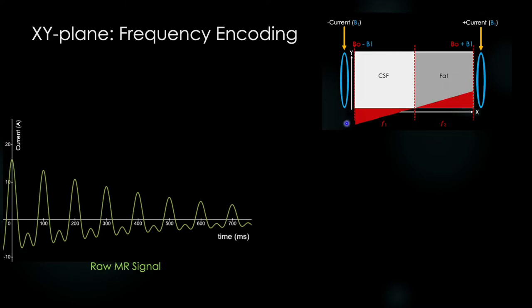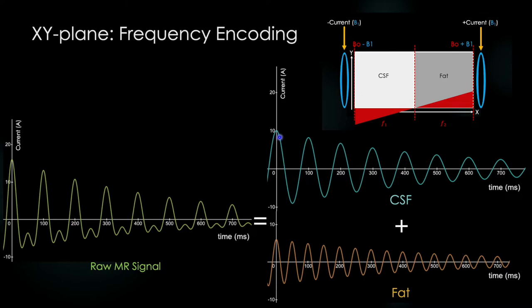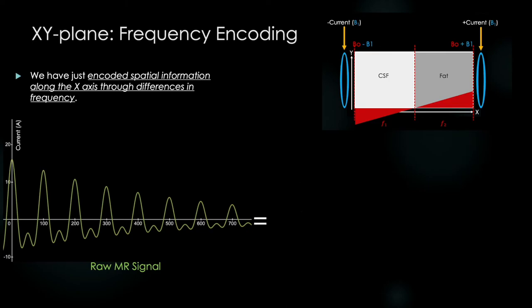Well, we've changed the magnetic field across the slice. So our CSF voxel will experience a different magnetic field than our FAT voxel, and will therefore precess at a different Larmar frequency than the protons in our FAT voxel. Our CSF voxel will then have a T2 decay curve that looks like this. And our FAT T2 decay curve will then look like this. Notice that they now have different frequencies, and when added together, they give us a much more complex looking raw signal. We have just encoded spatial information along the x-axis through differences in frequency.